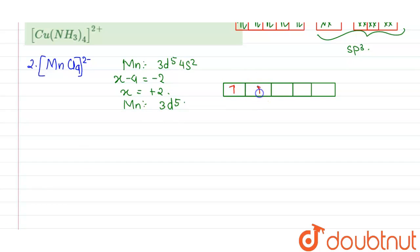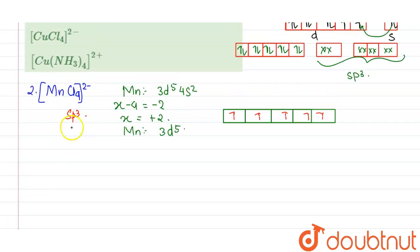So if this has 5 electrons present here and chlorine is a weak ligand, so no pairing will be initiated and the electrons will go to outer orbitals and it will form SP3 hybridization again. Now if the hybridization is SP3 again, it will be tetrahedral geometry.